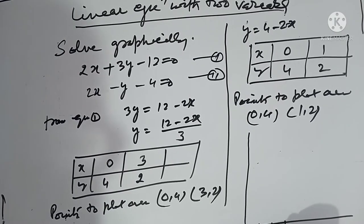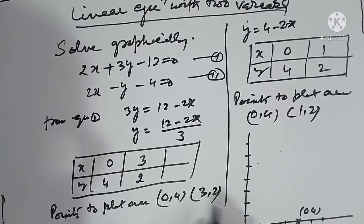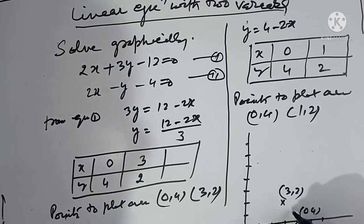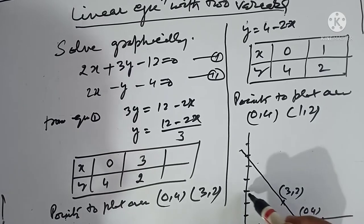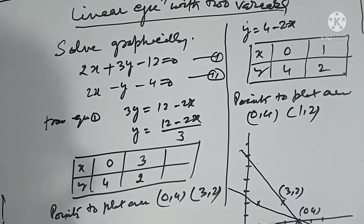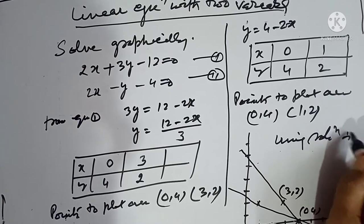Now we roughly draw a graph. When drawing a graph by hand, choose equal-sized boxes. We plot (0, 4) and (3, 2) from equation 1, and join them. From the same graph, we plot (0, 4) and (1, 2) from equation 2. Both lines share the point (0, 4), and the graph is drawn accordingly.